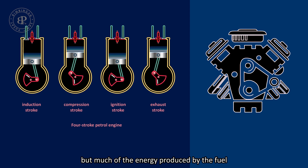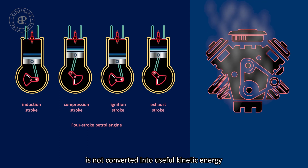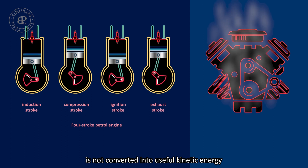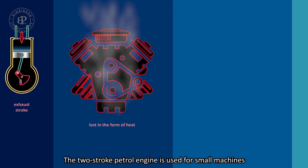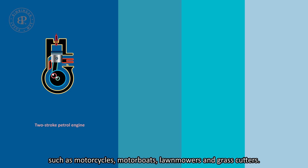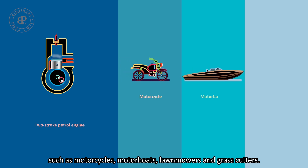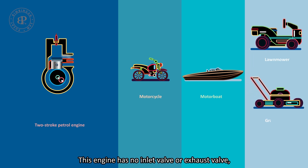Much of the energy produced by the fuel is not converted into useful kinetic energy, but rather lost in the form of heat. The two-stroke petrol engine is used for small machines, such as motorbikes, motorboats, lawnmowers, and grass cutters. This engine has no inlet valve or exhaust valve.